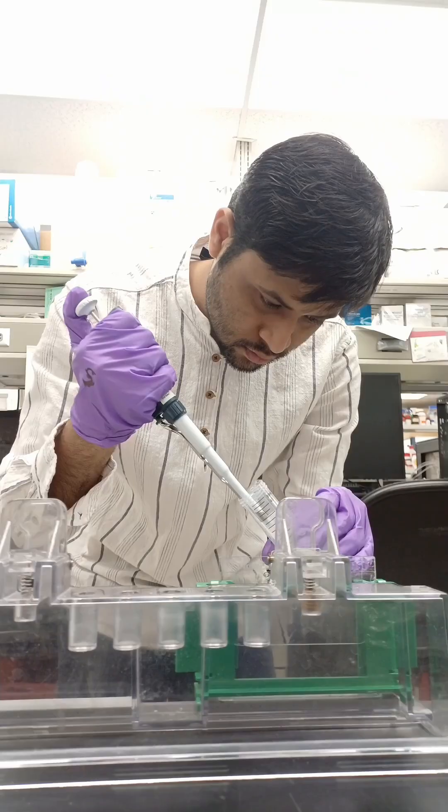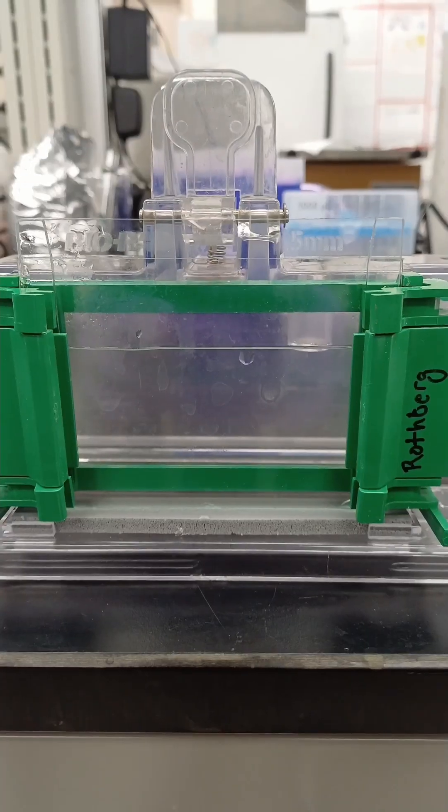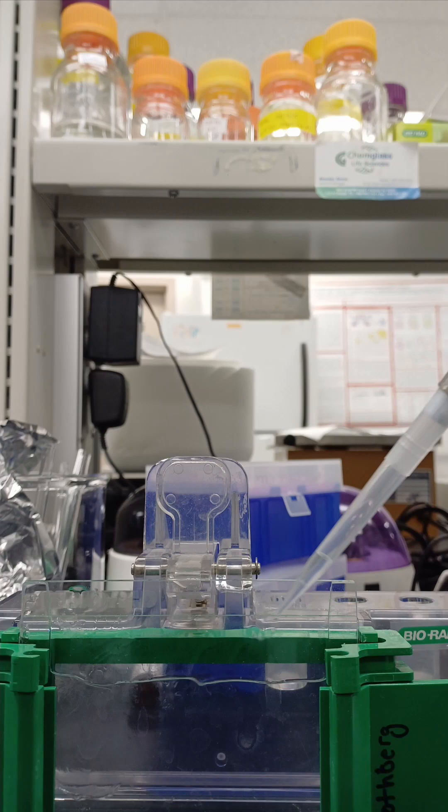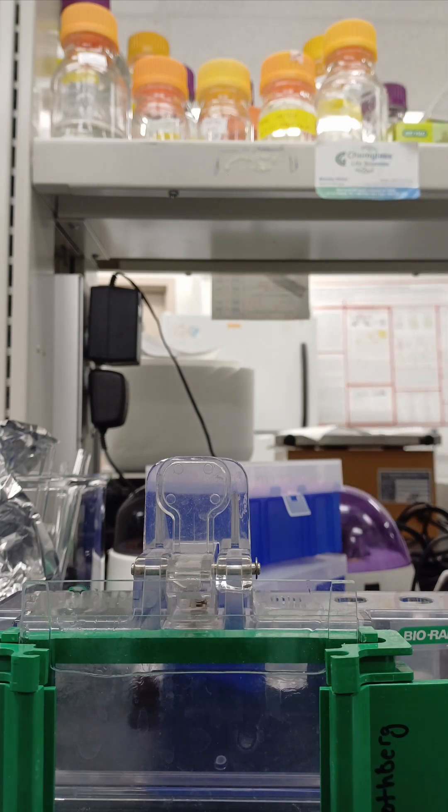Now remove the water and pour the resolving gel using a pipette. Leave about 2 cm of gap at the top for the stacking gel. Now add a thin layer of water or isopropanol on top to even up the surface and speed up the polymerization.